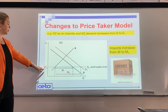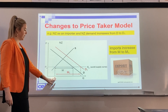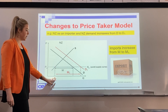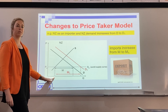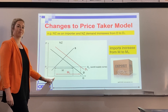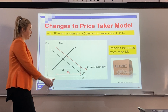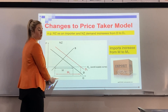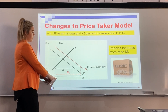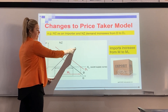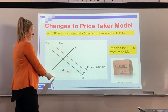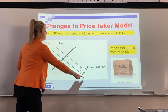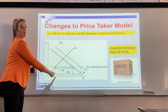Originally at our world price, supply would be labelled down here. When doing your labels, you always start with Q for quantity, then the curve — S for supply — then the market, NZ. So Q, S, NZ is your label for supply.